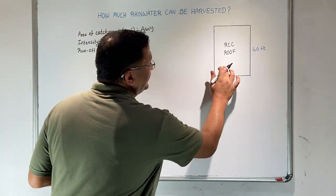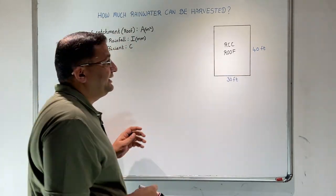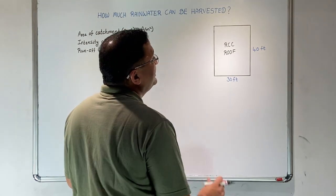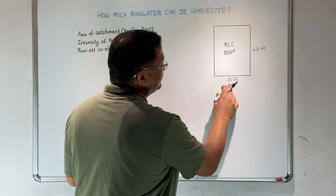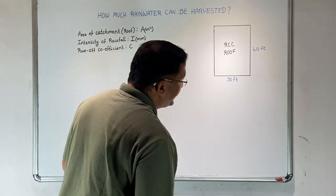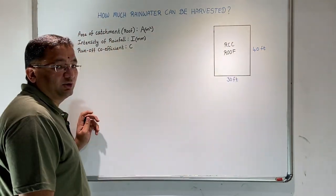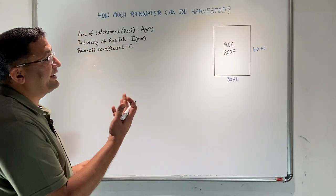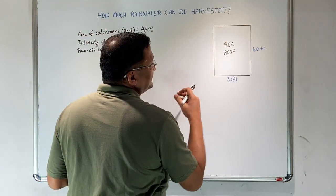This is a roof area. Typically in India, we measure the area in square feet. Let us say this is a catchment of 30 feet by 40 feet with an RCC roof. How do we calculate how much water falls off from the surface?